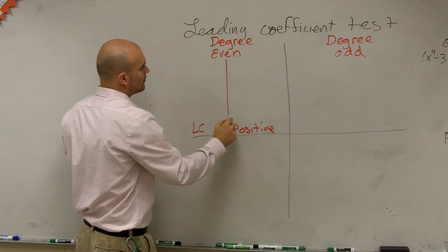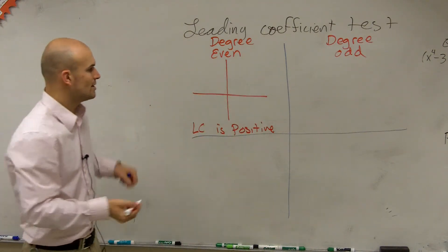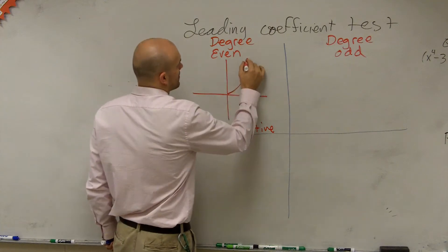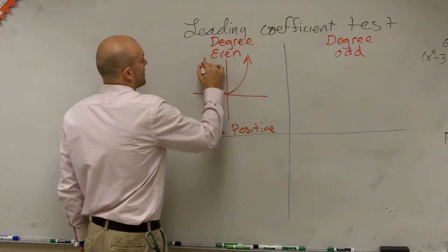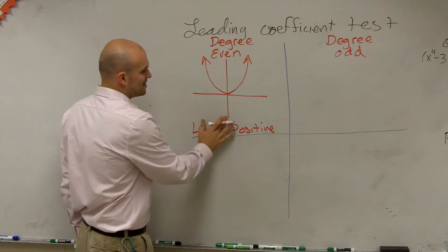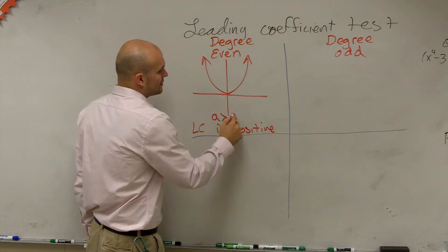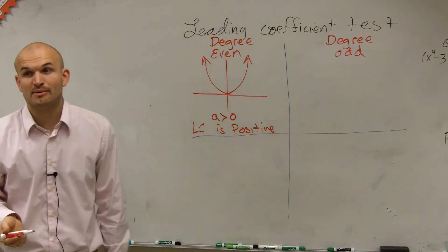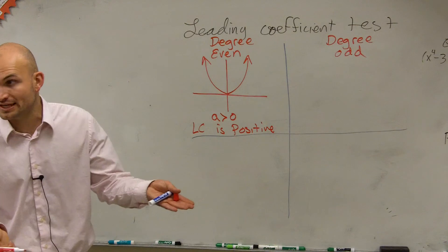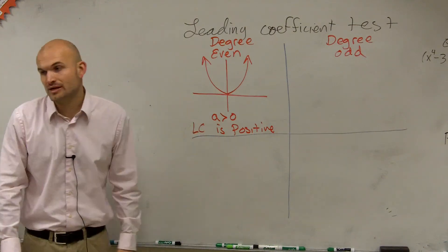So we know that when we have a quadratic, a quadratic is going to look like this. And that's when not just so much your leading coefficient is positive, but we say a is greater than zero, right? Because remember in a quadratic, a is your leading coefficient of your x squared. So we say a is greater than zero.